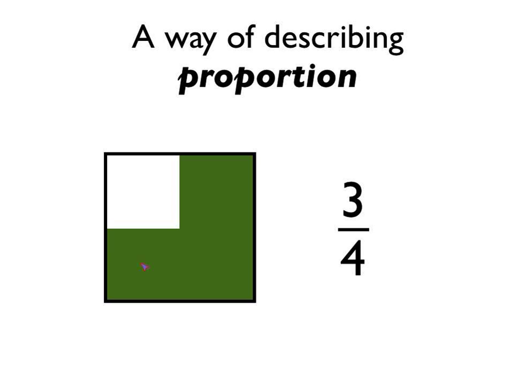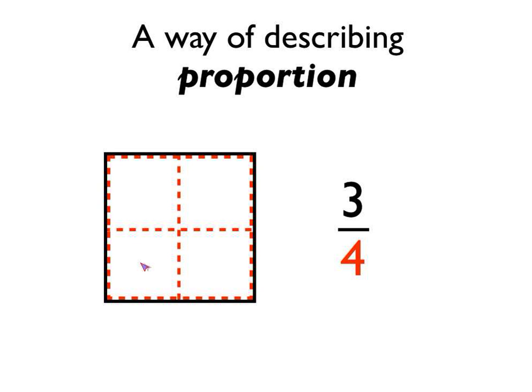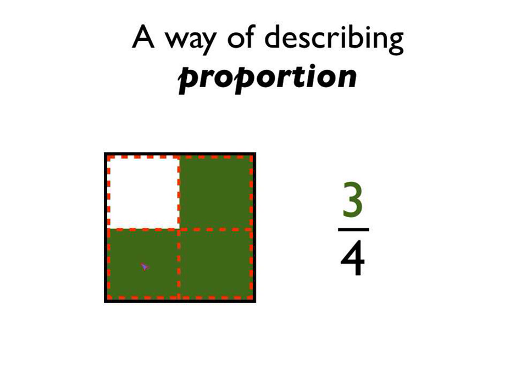Another example now. We're going to describe the proportion of the square that is shaded in green, and we'd use the fraction three quarters — three over four — to do that. So let's have a look at why. Well, the denominator is four, so we split the square up into four equally sized pieces. In this case we've got four mini squares, as you can see there. Then the top number, the numerator, tells us that three of those have been shaded in green. So that's why we write that the proportion of this square that has been shaded in green is three over four, or three quarters.